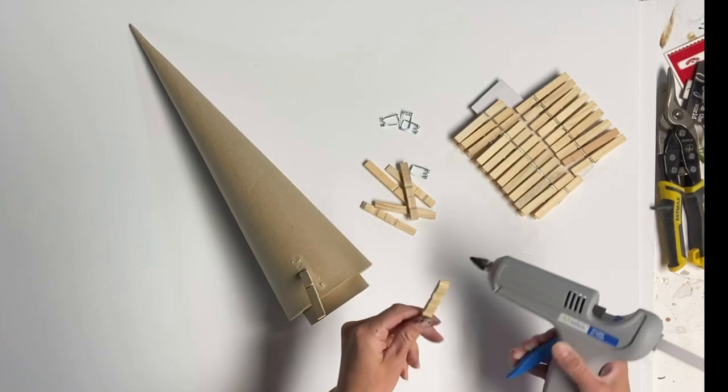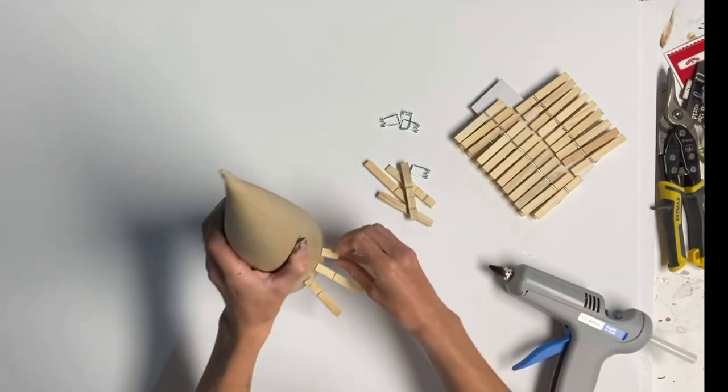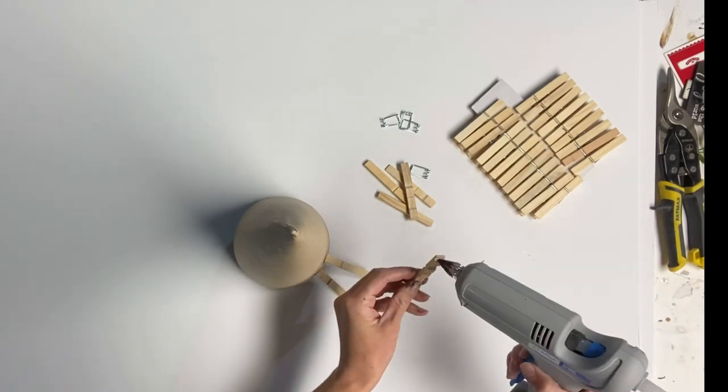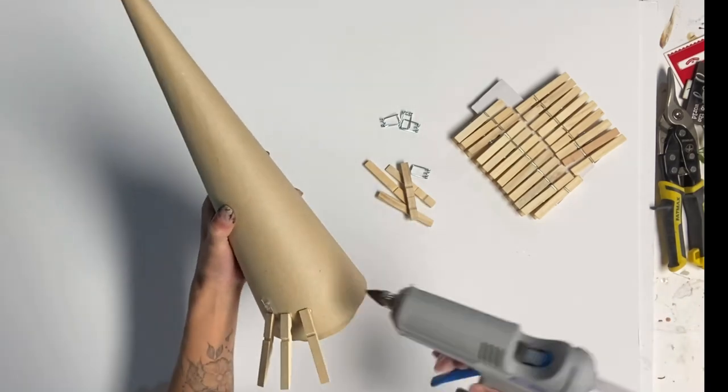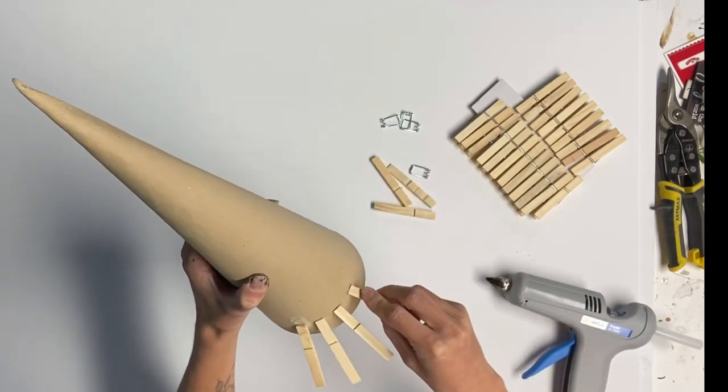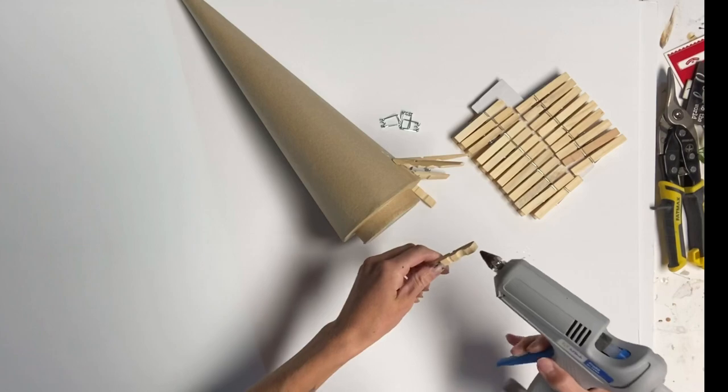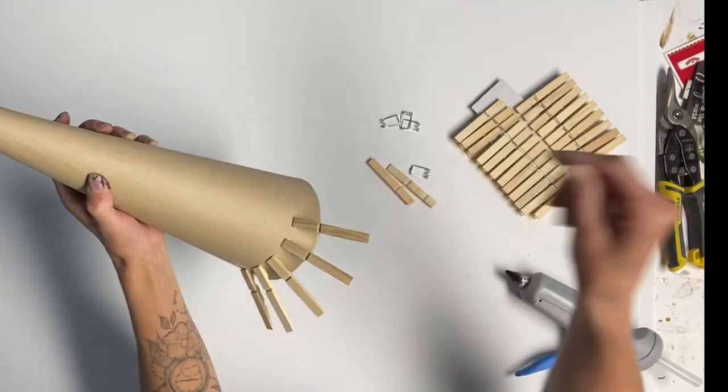Using my hot glue gun, I'm going to place some clothespins around the base of the tree cone. Now I'm only making them about a quarter of an inch apart. You'll kind of figure out the spacing as you go along. I didn't do any specific measurements.